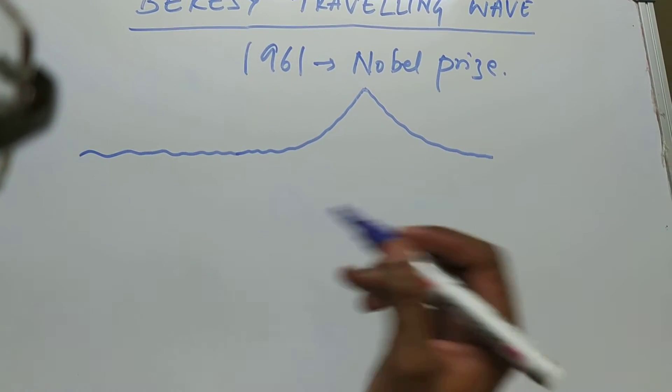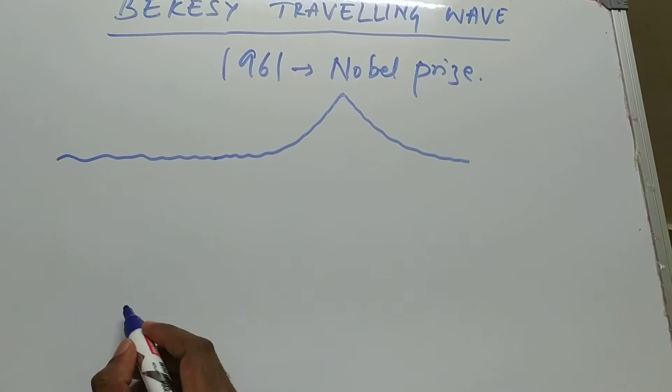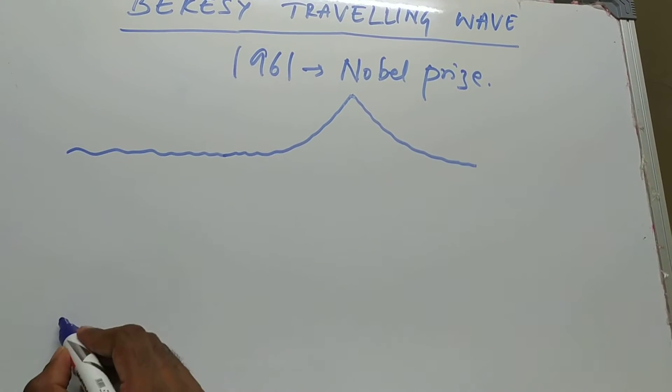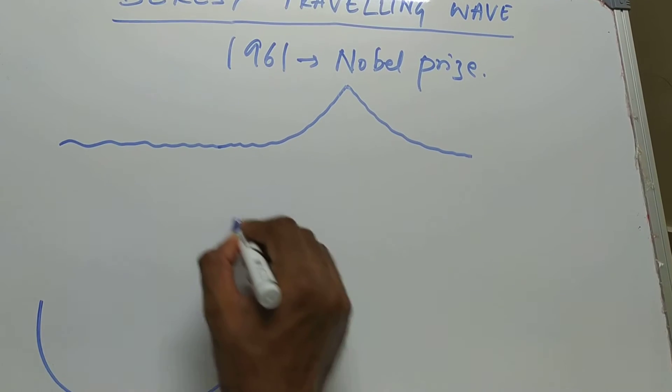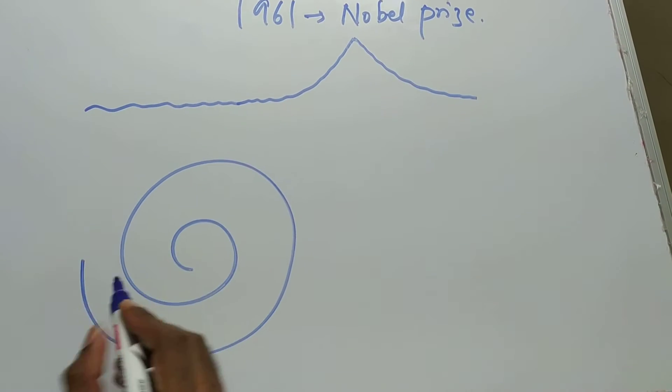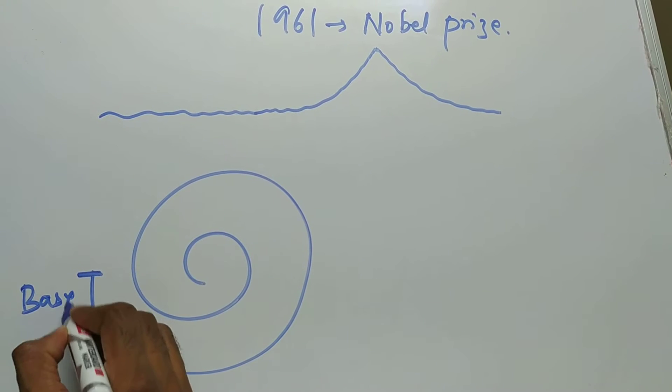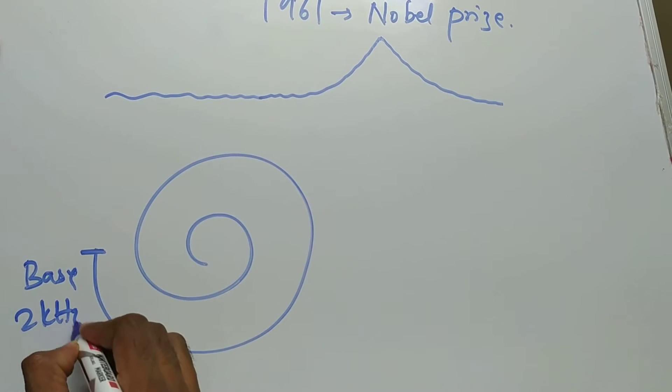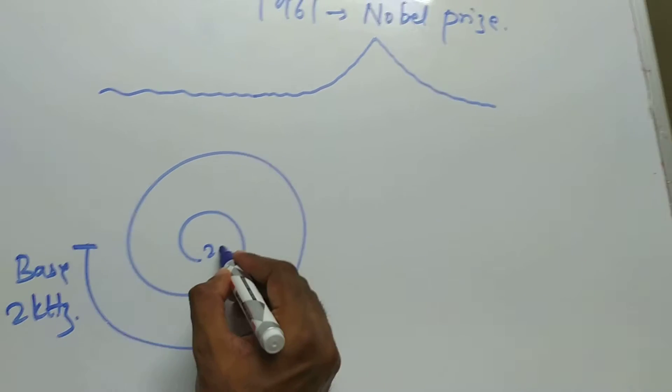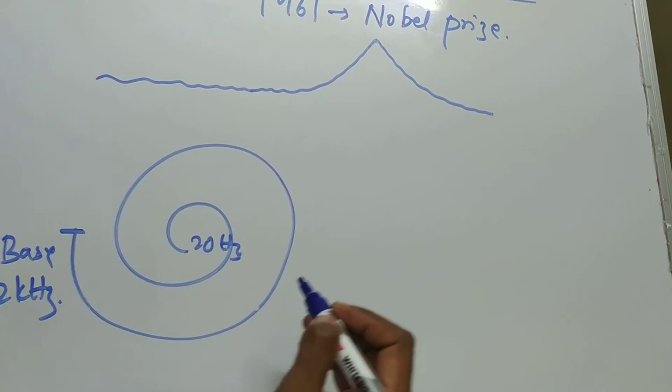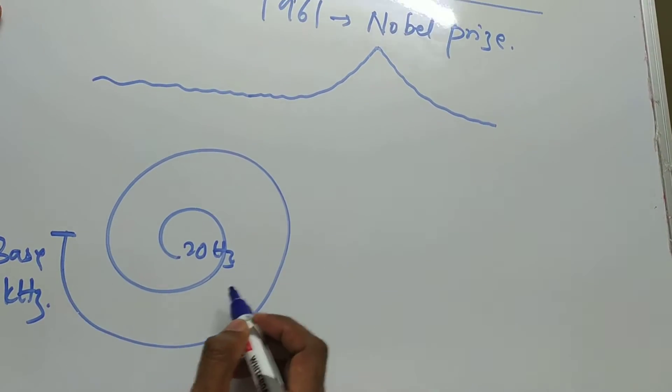He also gave a tonotopic representation of the cochlea, which means that in the cochlea, higher frequencies are represented at the base and lower frequencies are represented at the apex.